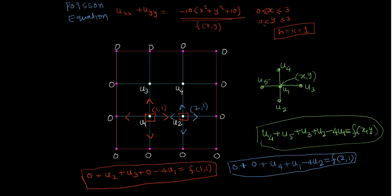Now let's apply the same on u3 and u4. So if you apply on u3, it will give me u1 plus 0 plus 0 plus u4 minus 4 times u3 equals f(1,2). And at u4 you'll get u3 plus u2 plus 0 plus 0 minus 4 times u4 equals f(2,2).